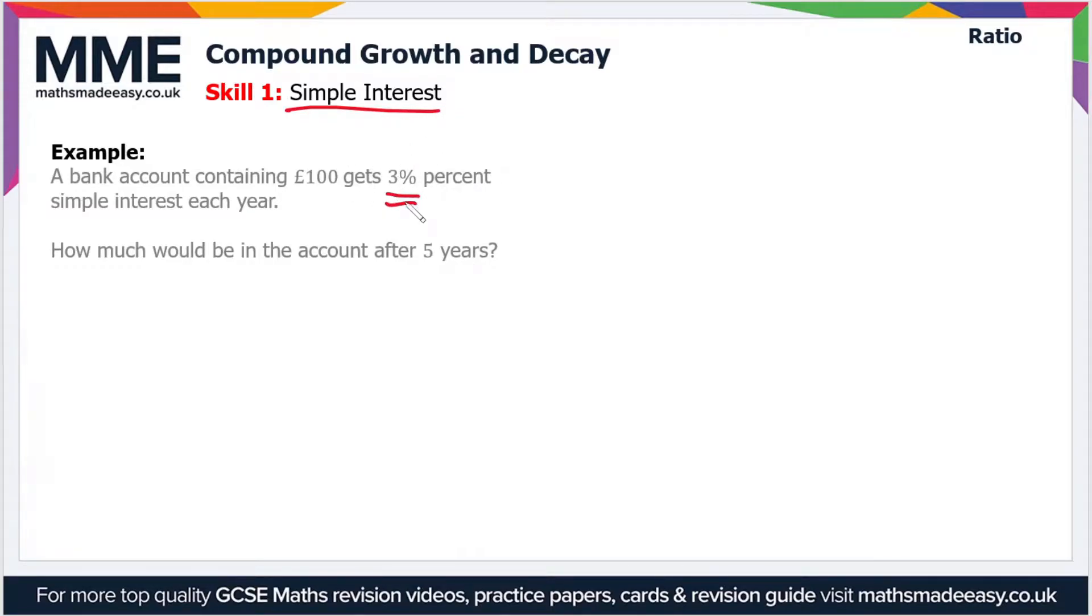Well, in simple interest what we do is we take the 3% initially, so 3% of £100 is just £3, and year upon year we just add £3. That's simple interest. So after 5 years we add £3 five times, so 5 times 3 is 15.